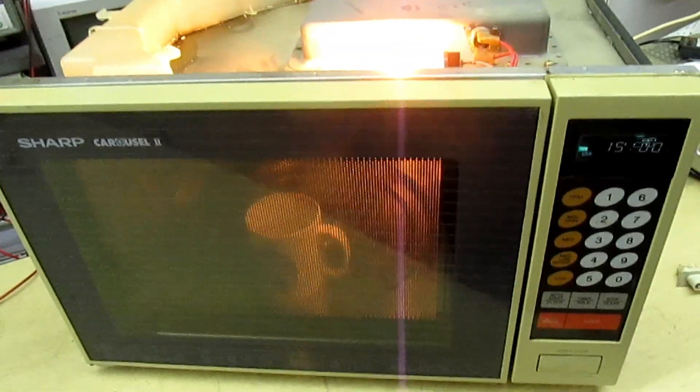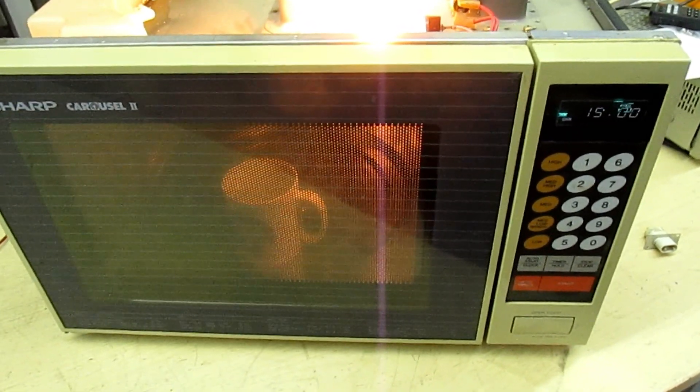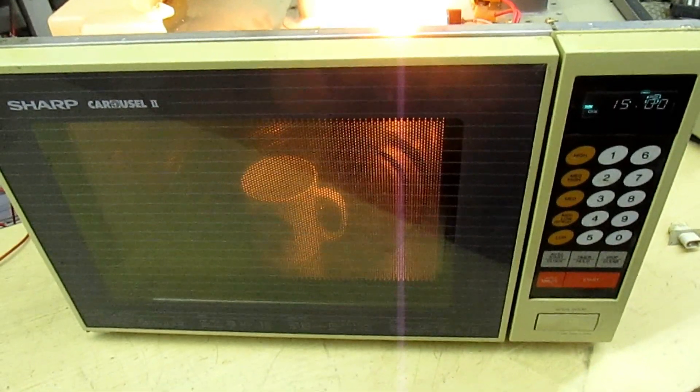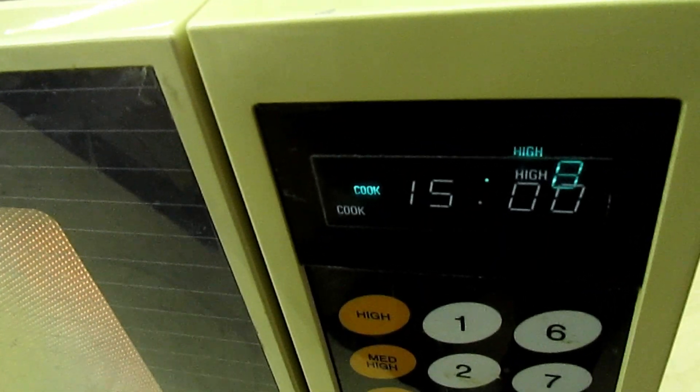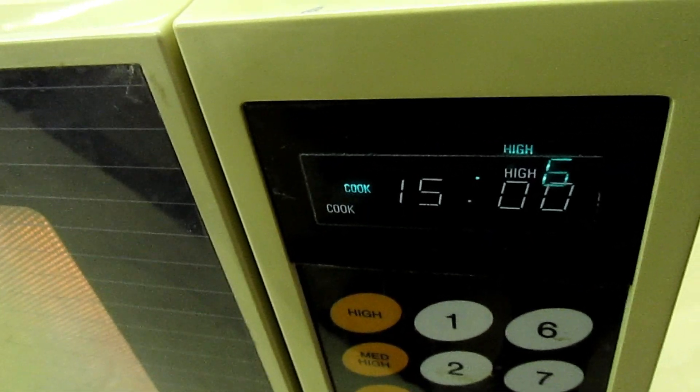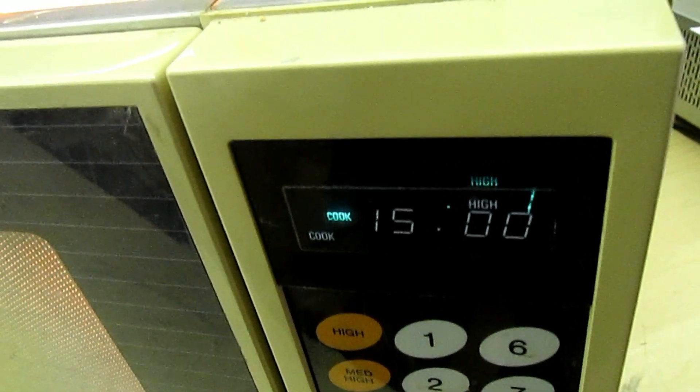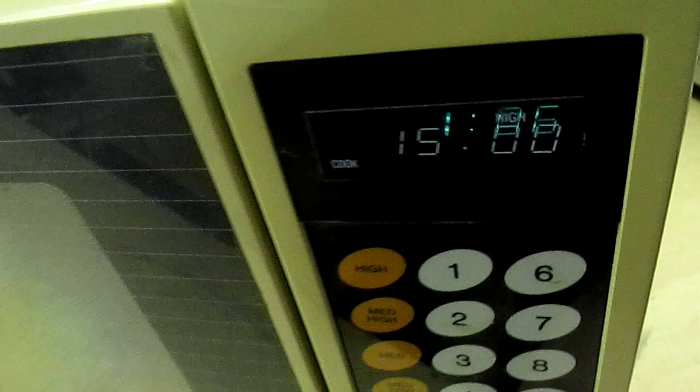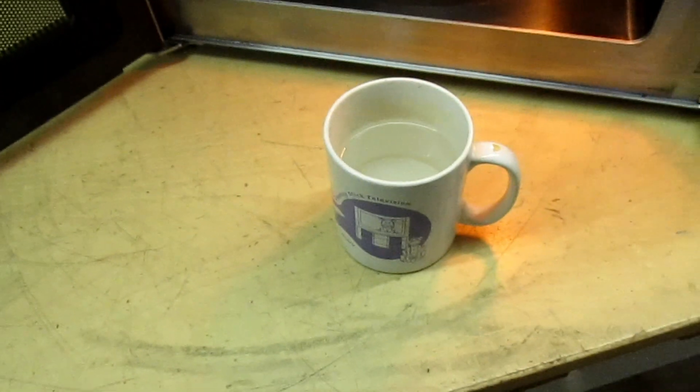And there you go, that's how to mend a magnetron when the filament terminals have gone leaky. Okay guys, thanks for watching. Subscribe to my channel for more. There we go, put a tea bag in there now, can have a cup of tea with that.